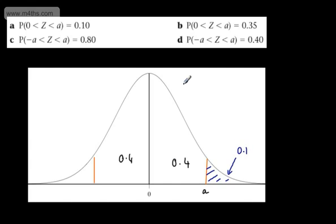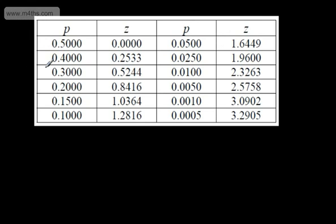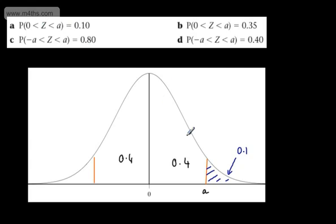So let's go look at 0.1 in the table. Be very careful that you're not putting 0.01 or 0.001. All we're going to do now is find this value: 1.2816. So A = 1.2816. Okay, so fairly logical, fairly straightforward.